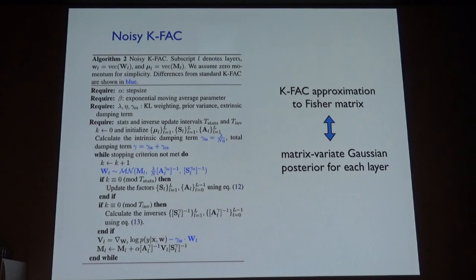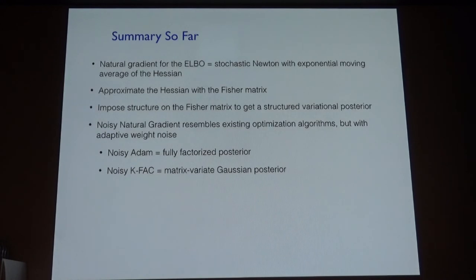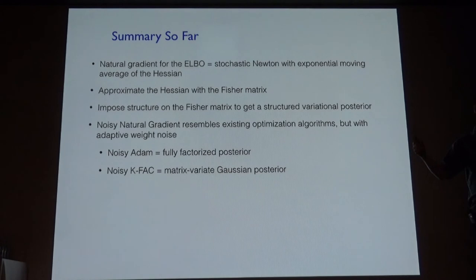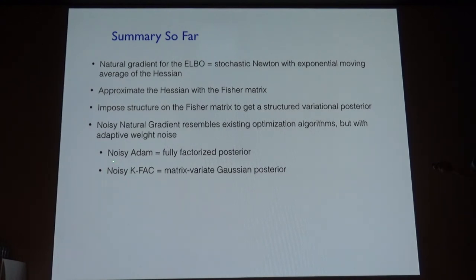We have the algorithm Noisy KFAC, which is basically like KFAC except that the weights are sampled from the posterior distribution in each iteration. The posterior distribution, using the KFAC approximation to the Fisher matrix, corresponds to a matrix-variate Gaussian distribution for the weights in each layer. This is a very powerful approximation because it can account for posterior correlations between different weights, and those correlations turn out to be very strong. To summarize: natural gradient for the ELBO is equivalent to a stochastic Newton procedure; we approximate the Hessian with the Fisher matrix; we impose structure on the Fisher matrix to get efficient algorithms. Noisy KFAC is just a slight variant of KFAC — KFAC with a sampling step — but training a matrix-variate Gaussian posterior.